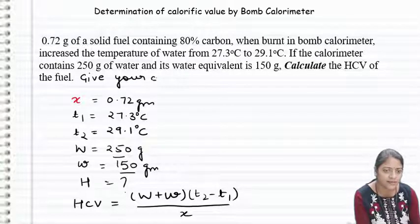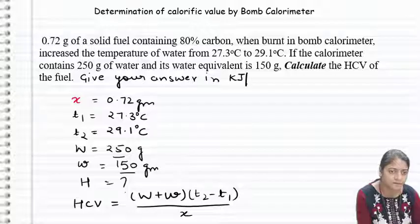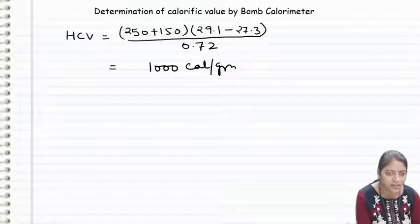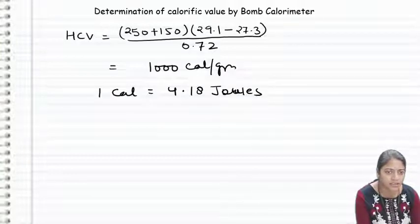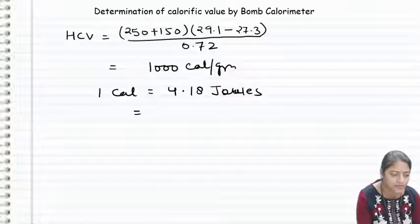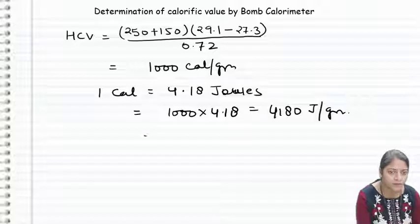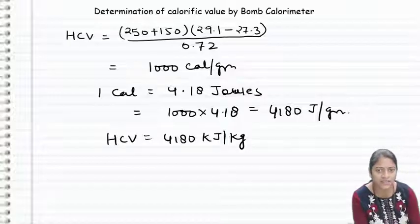If you want to give your answer in kilojoule per kilogram, we know one calorie will equal to 4.18 joules. So if we multiply these calories, then the answer would be 1000 into 4.18, that means the answer would be 4180 joule per gram or 4180 kilojoule per kilogram.